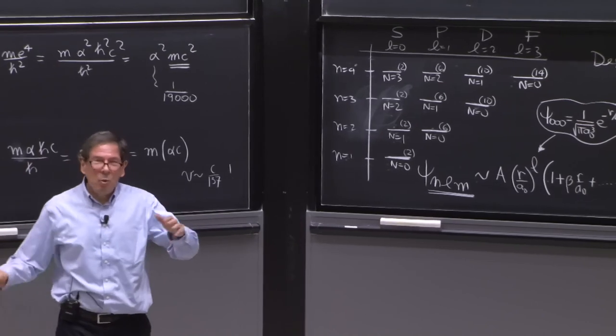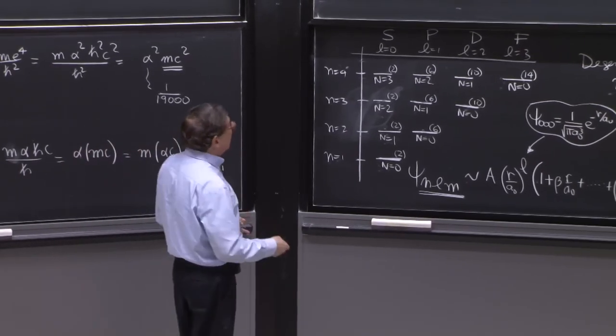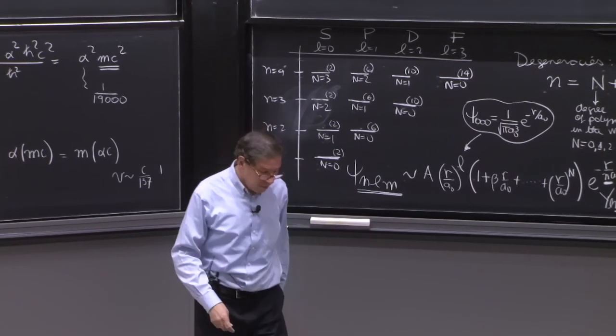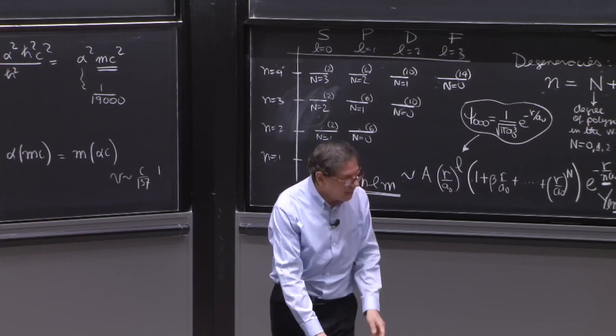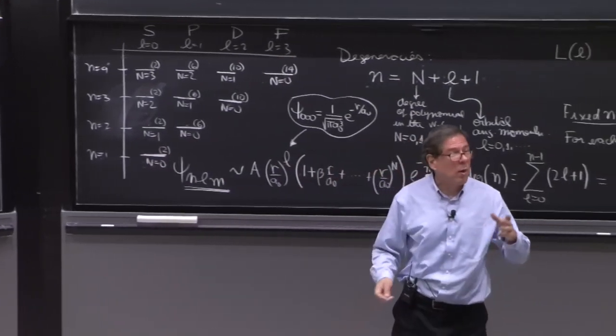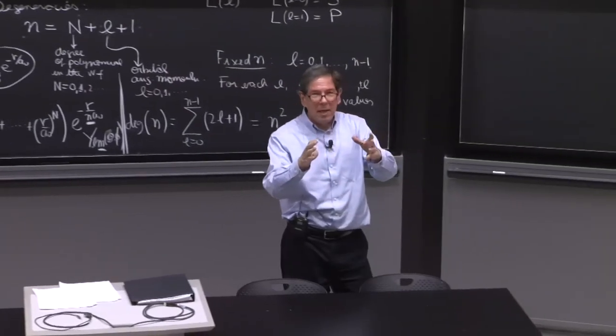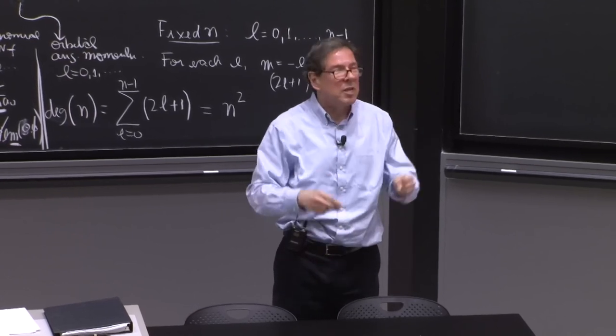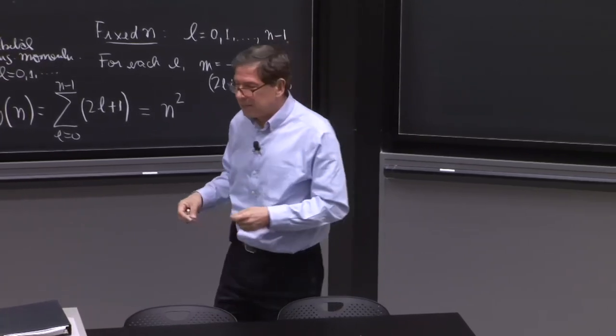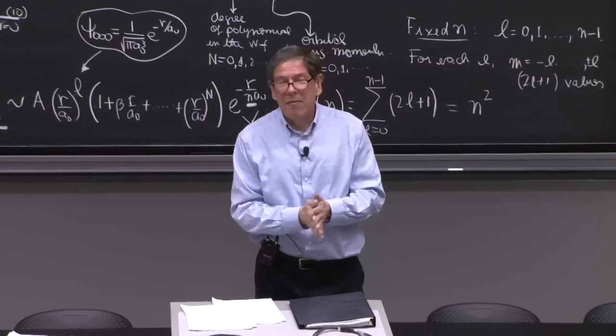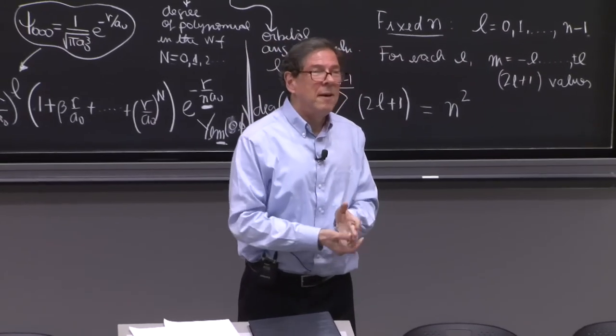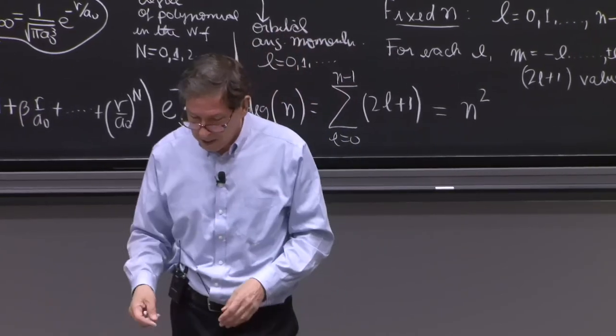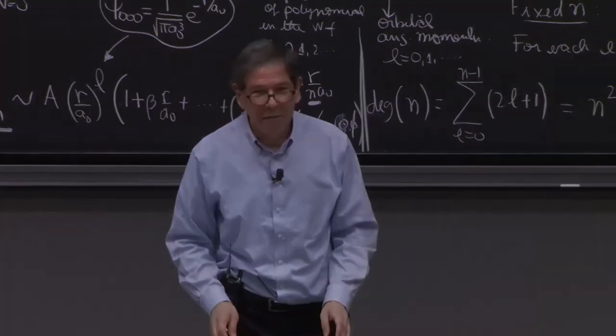When we'll do the fine structure, we'll have corrections due to the spin and corrections due to relativity. Both things will make our corrections. And by the time we do that, we may also want to explore the atom by putting it in an electric field. That's the Stark effect. You can put it in a magnetic field. And that's the Zeeman effect. The magnetic field can be weak or it can be strong. And it's a different approximation.